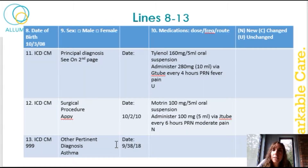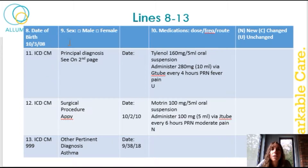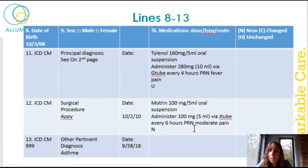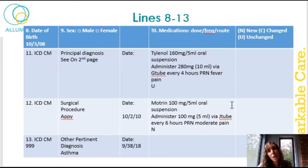Underneath that we have lines eight through thirteen. Number eight is the date of birth for the patient. Number nine is whether your patient is male or female. Number ten lists the medications. This is only the beginning of the medication list because usually our patients have more than one or two meds, so they continue on to the next page.